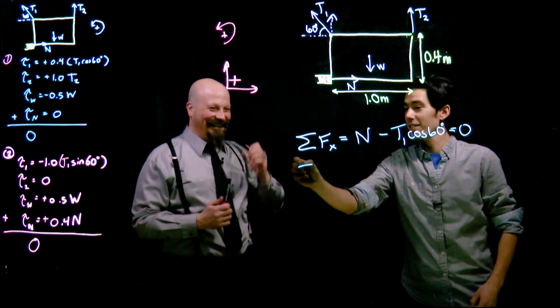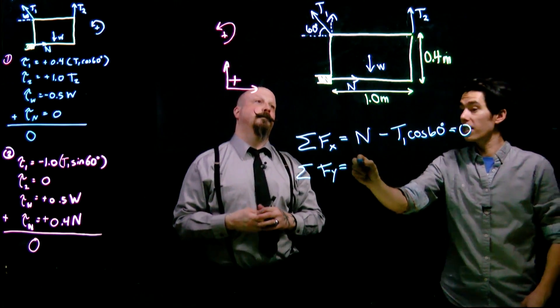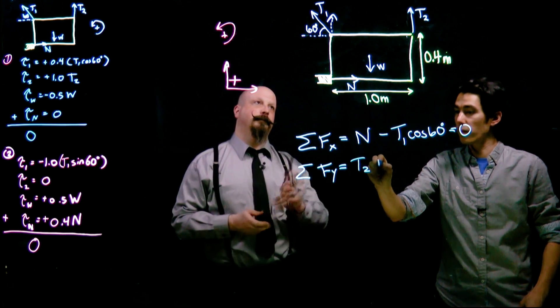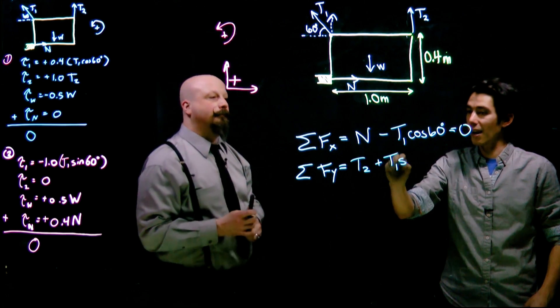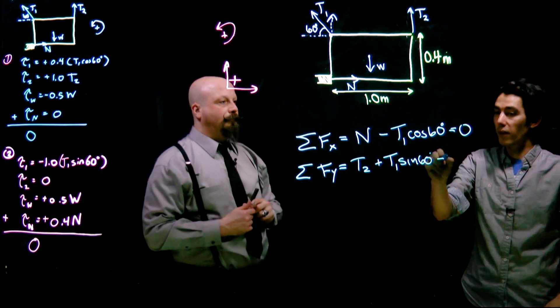And then in the y direction, the sum of the forces are also going to be equal to zero. So here we've got T2 is pointing straight up, we've got T1 sine of 60 degrees will give us the y component of that, and we've got gravity going downwards